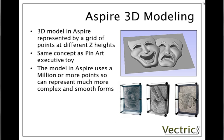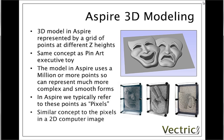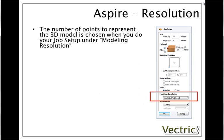Within the context of the software and the documentation you'll typically hear us refer to these points as pixels. This is the same terminology that you'd hear people use about a computer image, and the concept is very similar in that the number of pixels is often going to affect the quality of the image, or in our case the 3D model. Within Aspire one of the settings that will determine this quality is called the resolution, which we set during our initial job setup. You can see towards the bottom of the form, highlighted by this red rectangle, an area called modeling resolution.